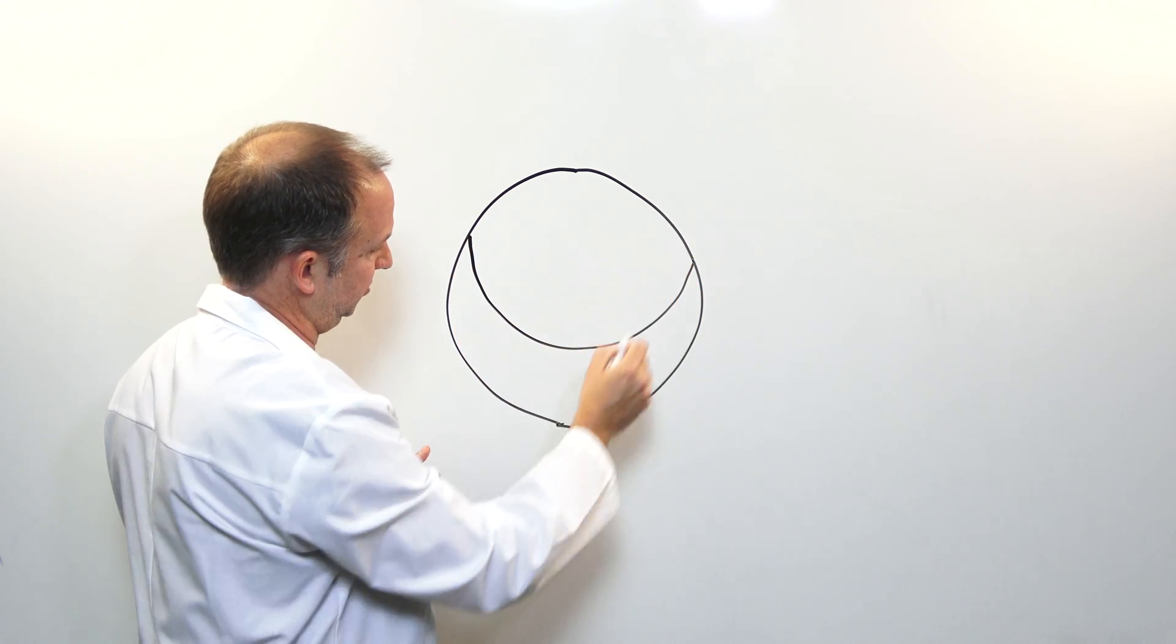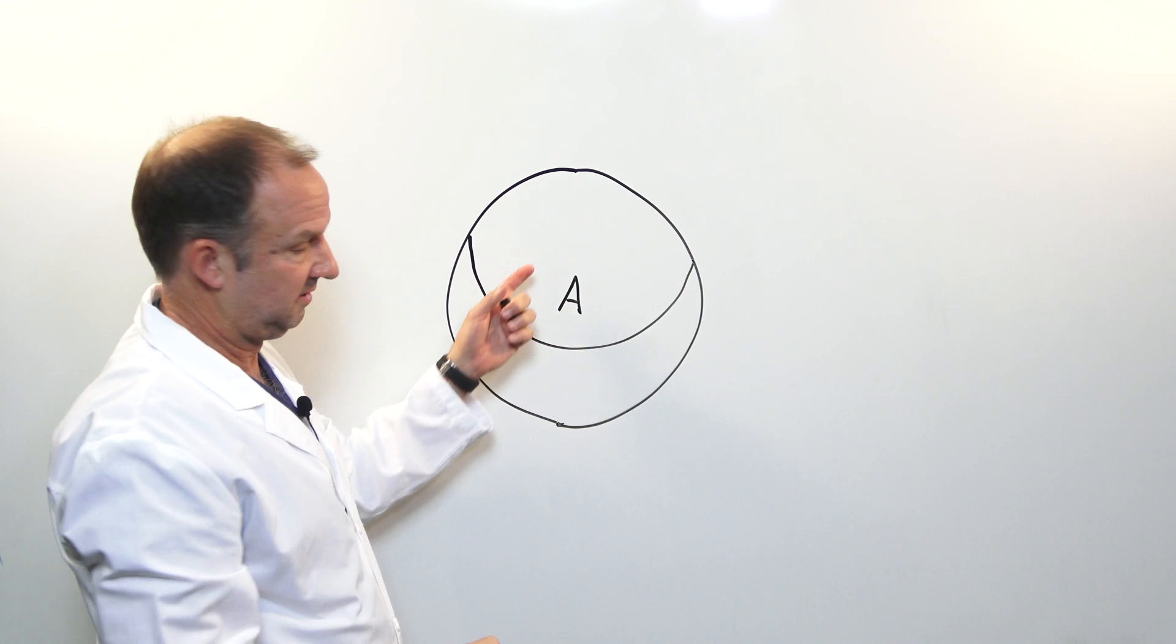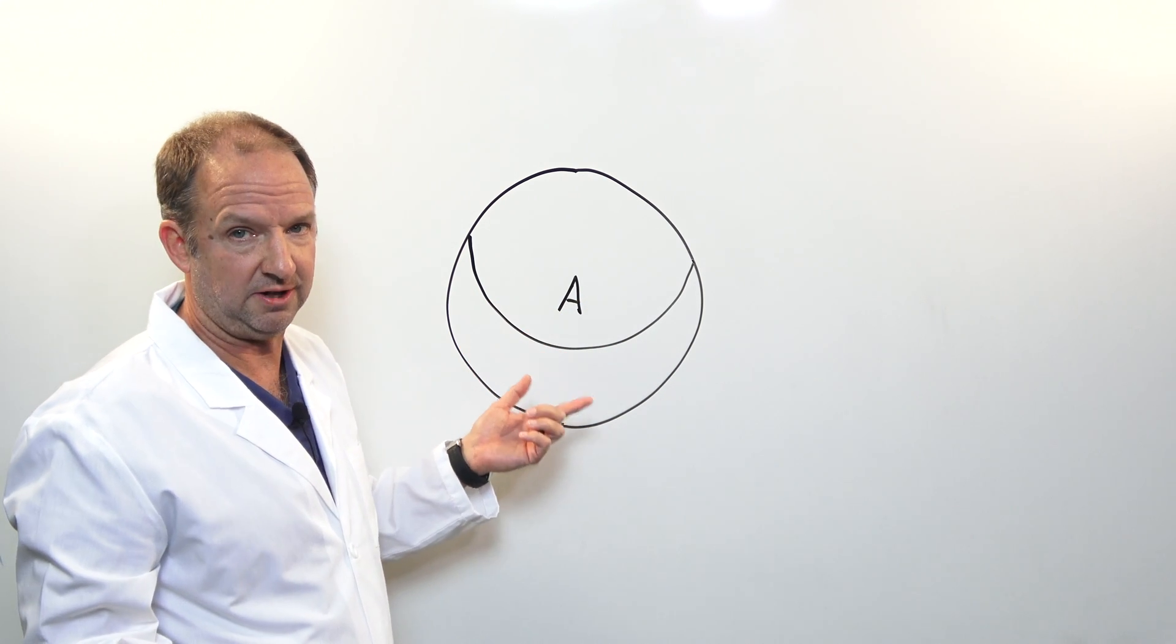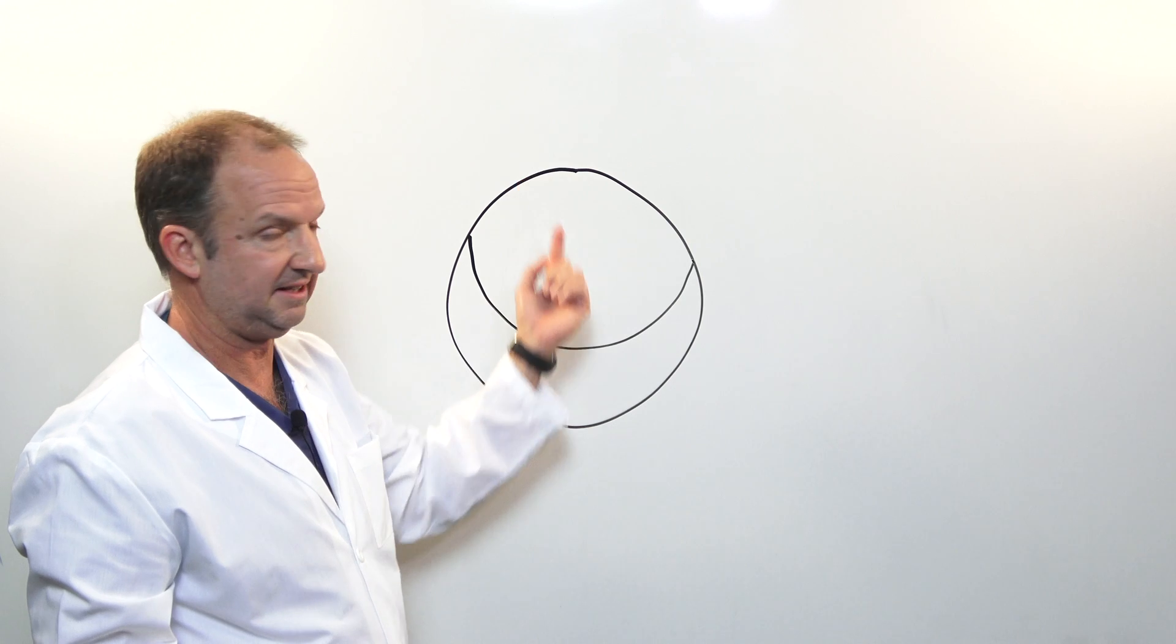The valve has two leaflets, the bigger one that we call the anterior leaflet and the reason that we call it an anterior leaflet is that it faces the front of the heart.